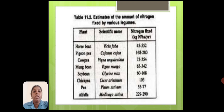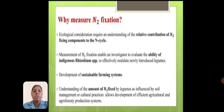This also accounts for the amount of nitrogen fixed in the plants. Why measure nitrogen fixation? Ecological considerations require an understanding of the relative contribution of nitrogen-fixing components of the N-cycle, and this is important for the development of sustainable farming systems.